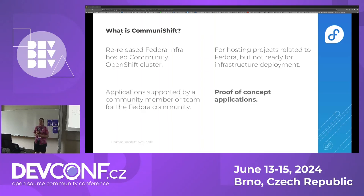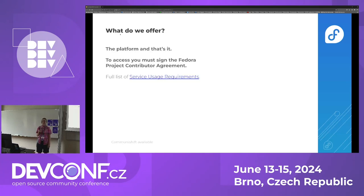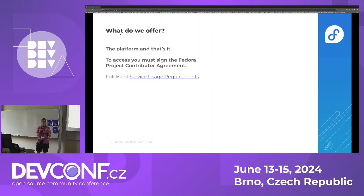So what should it serve for? It should serve for experimenting, learning about OpenShift, testing your application, testing how it will work and behave on OpenShift, for proof of concepts, and so on. Users of the platform are bound by rules, policies, and behavior of the Fedora Project Contributor Agreement. We need you to have a FAS account, the Fedora Project Contributor Agreement signed, and the code of conduct.